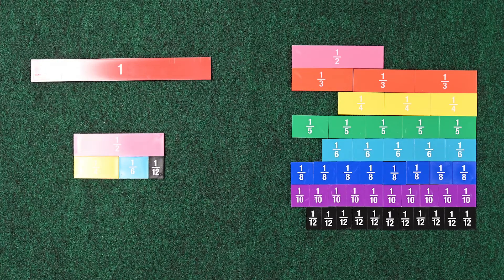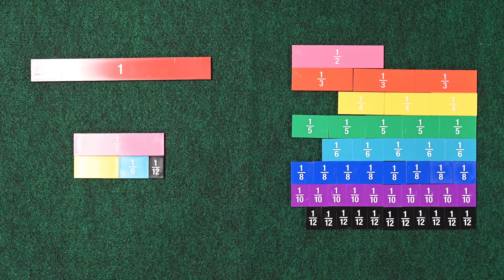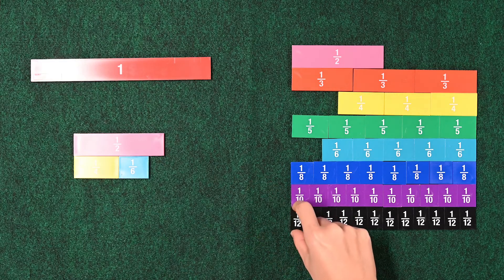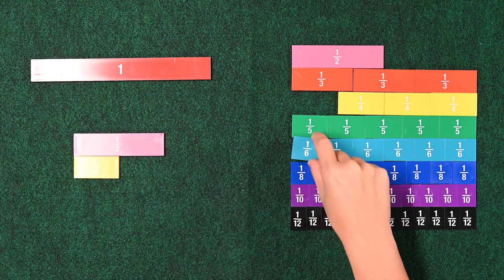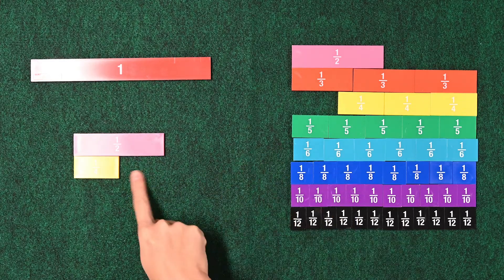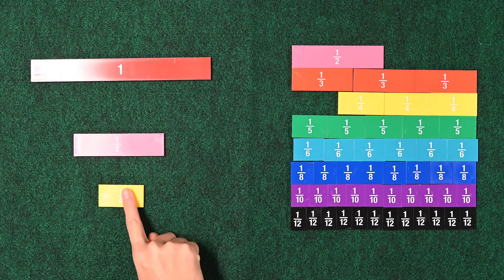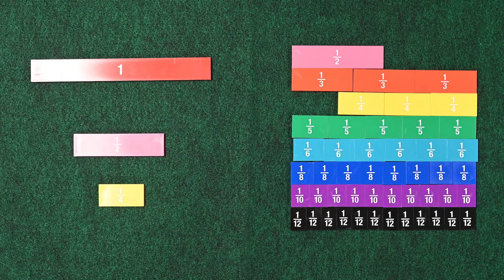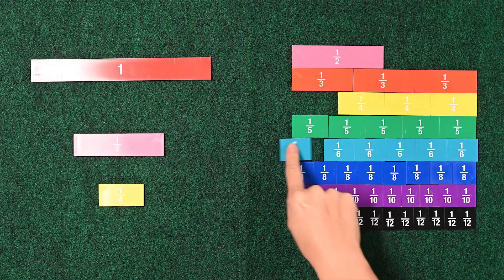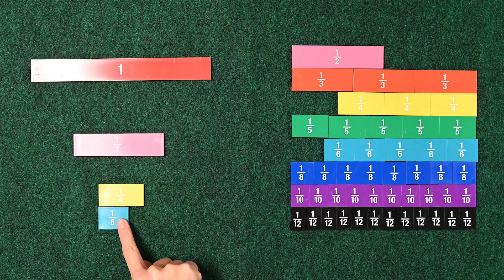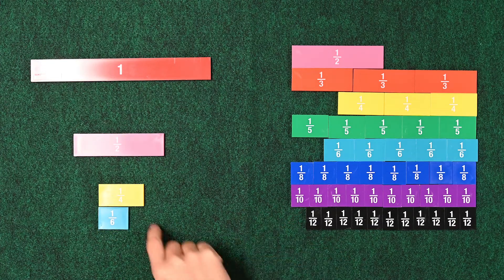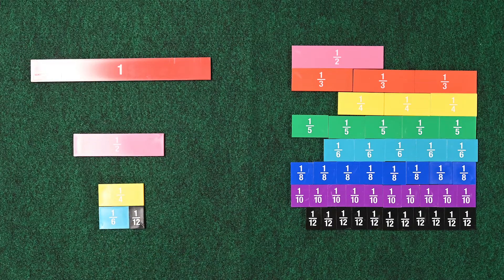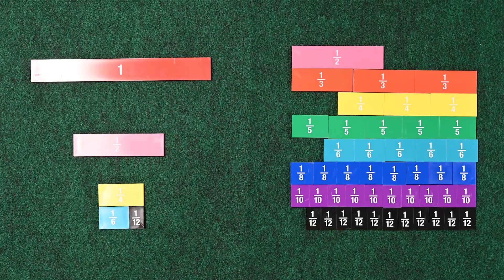Now, let's take the 1 4th and see what makes the 1 4th, because you remember we said that the 2 of the 1 4ths would make the 1 half. So, let's see what makes the 1 4th. Let's try the 2 pieces we had earlier, the 1 6th and the 1 12th. And sure enough, 1 6th plus 1 12th is 1 4th.